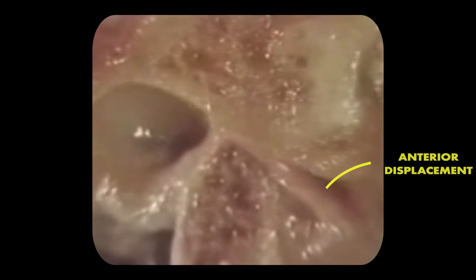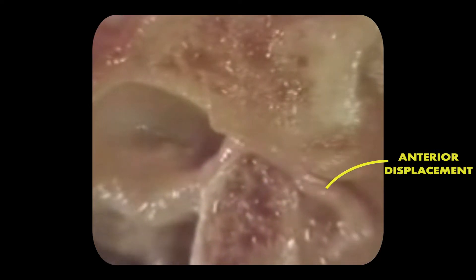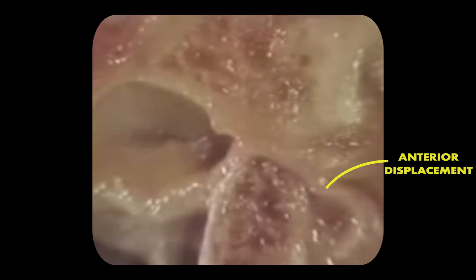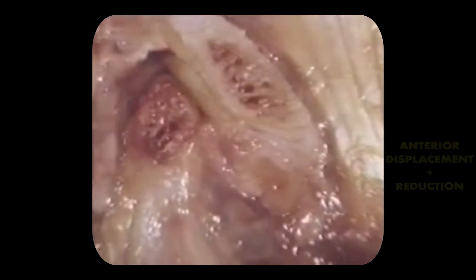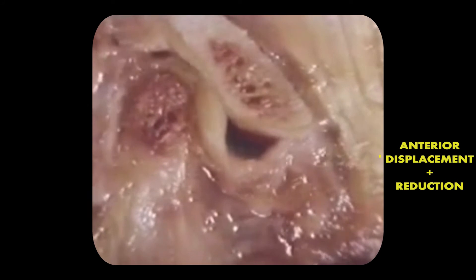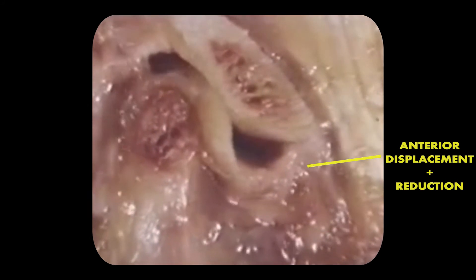If the disc subluxes enough, it no longer has that biconcave superior-inferior shape and becomes malformed so it doesn't really fit anymore. A lot of the clicking you hear or feel with TMJ derangements is because the disc ends up being anterior — it's actually reducing and then subluxing with every movement.